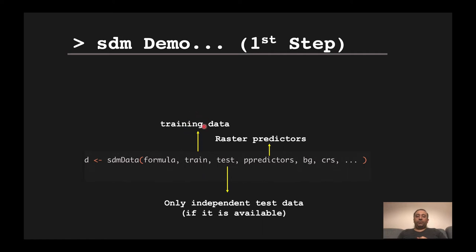If you don't have a data frame containing all predictors and the response variable, but have point data, you may also need predictor variables in raster format. In that case, introduce those rasters in the 'predictors' argument. It's optional — you only need to define raster predictors when you don't already have that data in the training data.